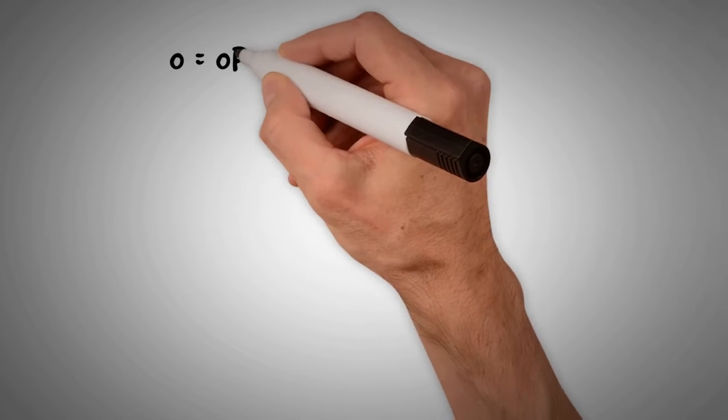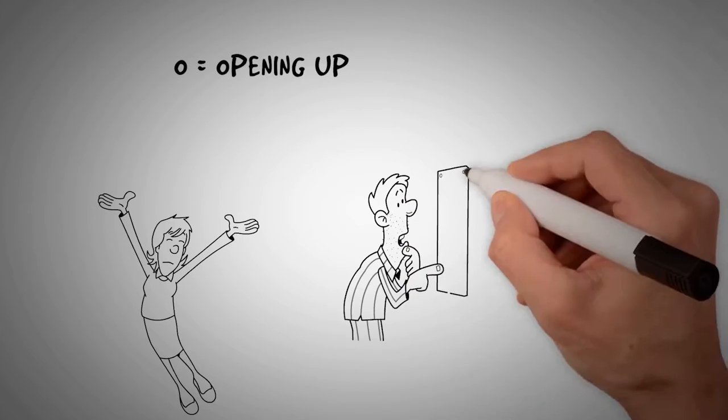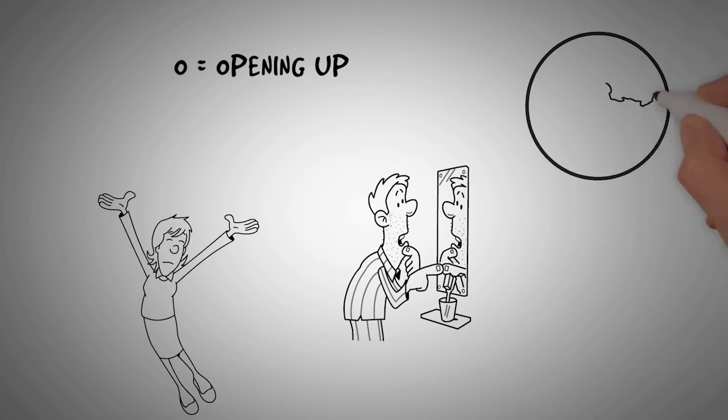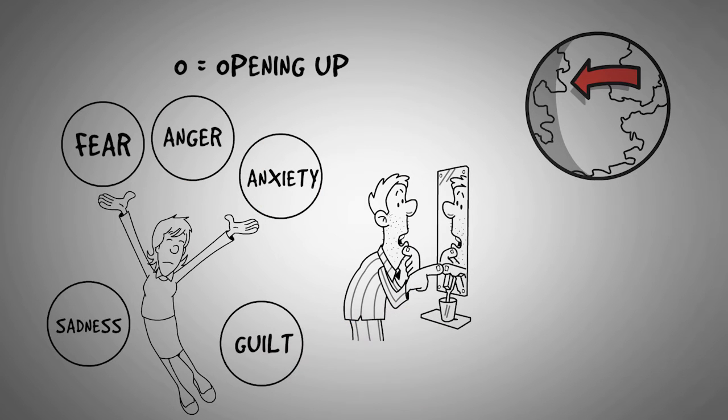O is for opening up. This means making room for difficult feelings and being kind to yourself. As this crisis unfolds, we'll all feel fear, anxiety, anger, sadness, guilt, loneliness, and so on.